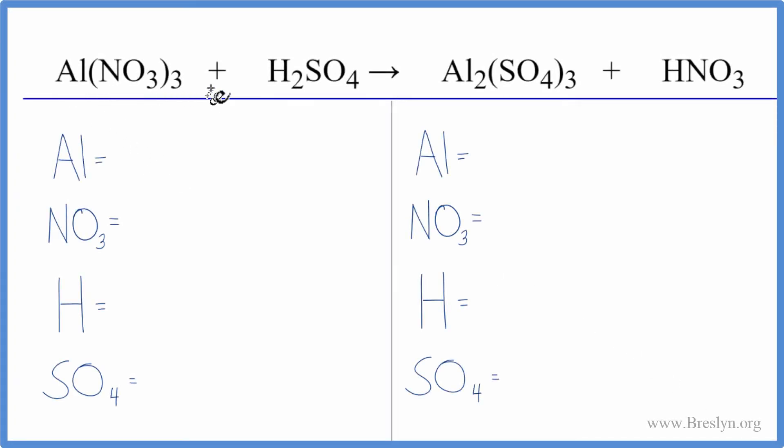In this equation we have aluminum nitrate plus sulfuric acid. To balance the equation we're going to use a trick that'll make it a lot easier. So here's how we'll do it - we have one aluminum atom.